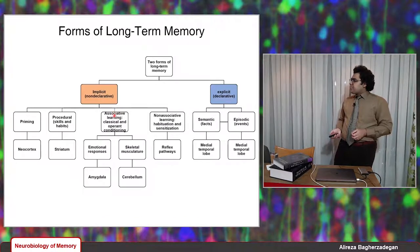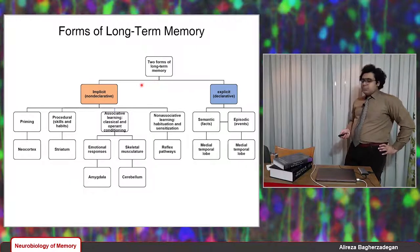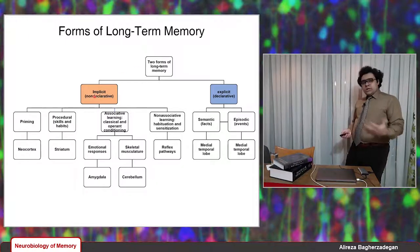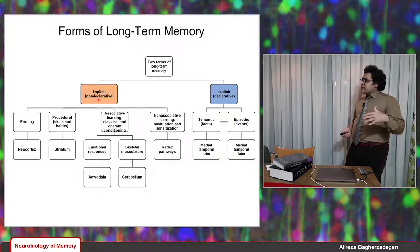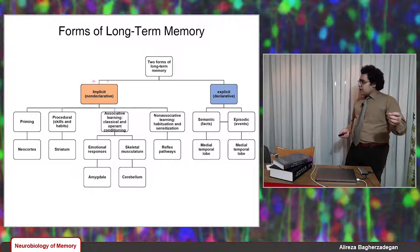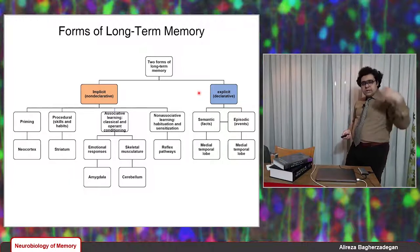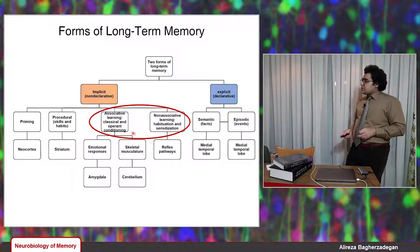We have this chart from the very first video. These are the two forms of long-term memory. There are two general forms: implicit memory, or non-declarative, and explicit ones. I think the most important difference between implicit and explicit memories is related to the process by which they are recalled. Implicit memories are recalled basically unconsciously, but explicit memories are recalled consciously. In this lecture, I'm going to talk about classical conditioning and two forms of non-associative learning: habituation and sensitization.